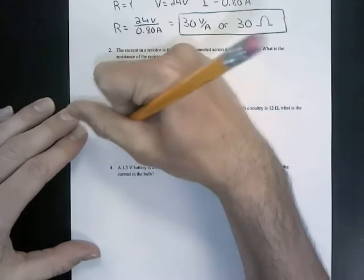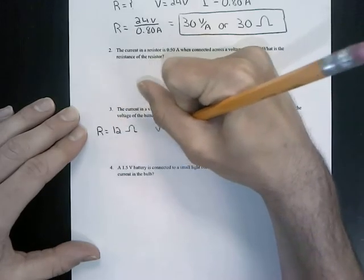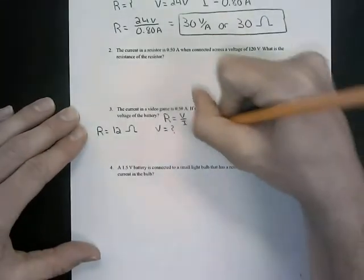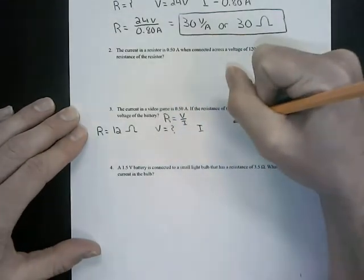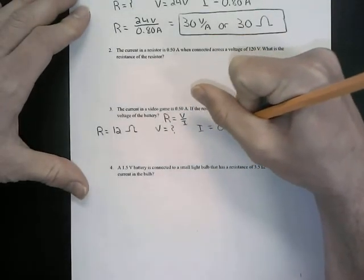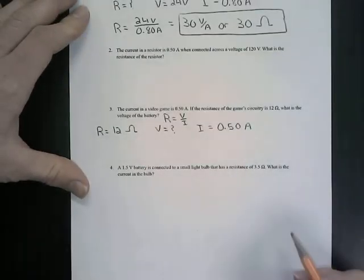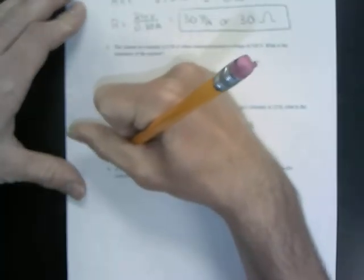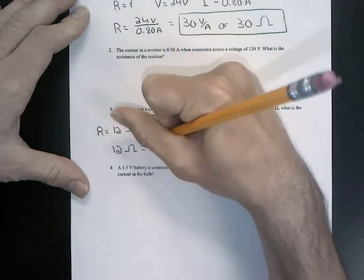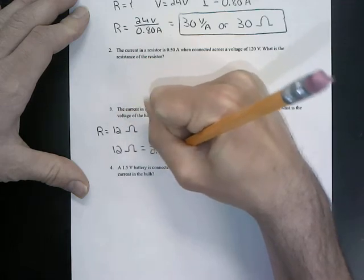So the resistance is given in ohms, which is 12 ohms, and the voltage, we don't know. It says, hey, go find the voltage, but the amps is given at 0.50 amps. So now we're going to solve for our V for volts. So we're going to have 12 ohms equal to our V for volts. We don't know what it is, all divided by 0.50 amps.